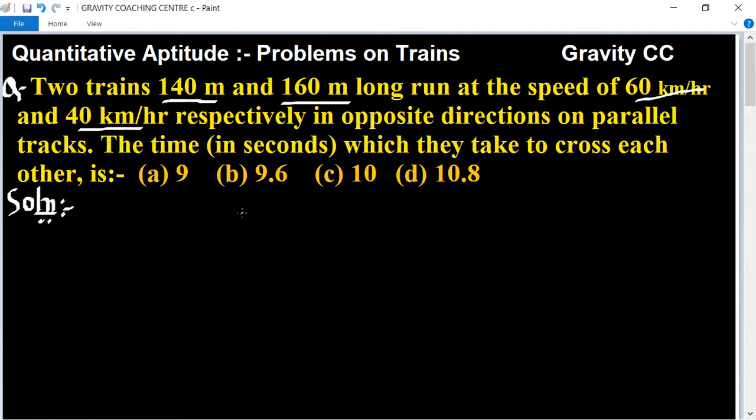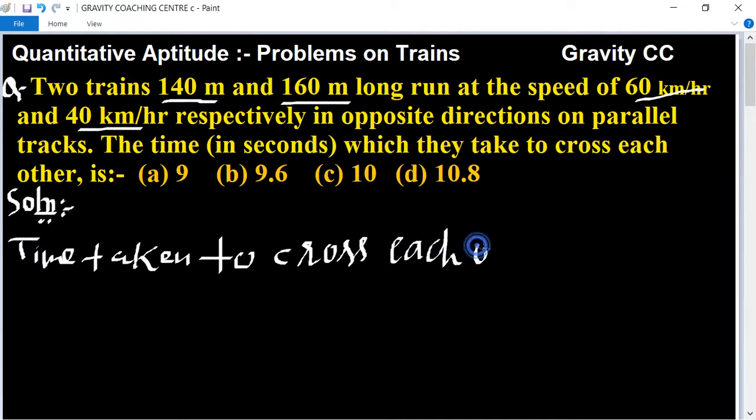In this question, the two train lengths are 140 and 160 meters. We use the formula: time taken to cross each other equals length of the first train plus length of the second train upon speed of the first train plus speed of the second train into 18 upon 5.